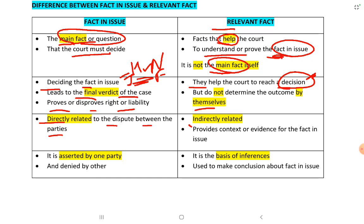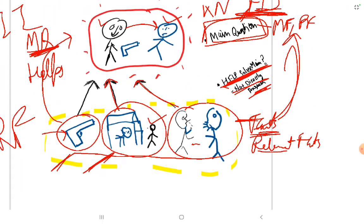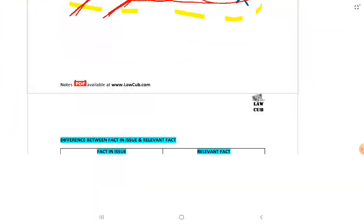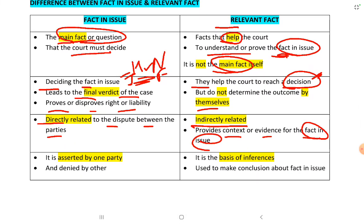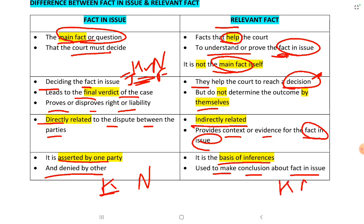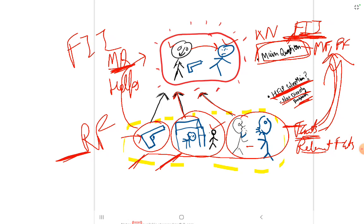Fact in issue is directly related to the dispute between the parties. Relevant facts are indirectly related — they provide context and evidence for the fact in issue. The fact in issue is asserted by one party and denied by the other. In the above example, Nilu's party asserts that Kalu has killed Nilu, and Kalu's party denies it. Relevant facts are the basis of inferences used to make a conclusion about the fact in issue.